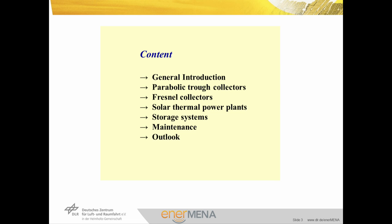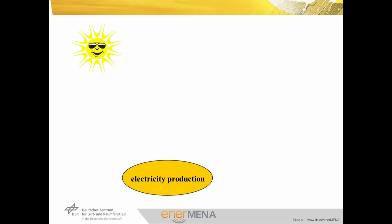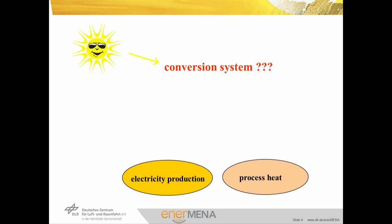In order to explain the use of those collector technologies I would like to start very general. Imagine you are living in a country with a lot of sun and you want to produce electricity and process heat. You need a conversion system to do that, which needs steam. Normally for electricity production you would need steam of 300 to 500 degrees, and for process heat production 100 to 300 degrees.